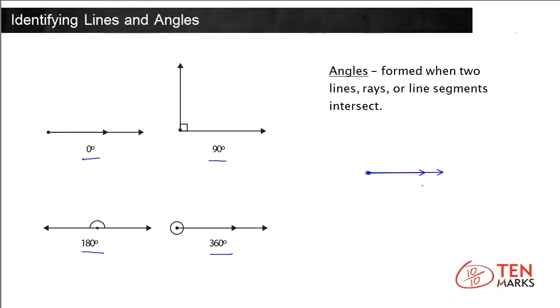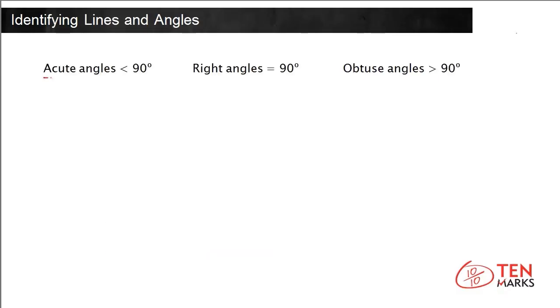Angles can be acute, right, or obtuse, based on their measure. An acute angle is less than 90 degrees in measure. A right angle exactly equals 90 degrees in measure. And an obtuse angle is greater than 90 degrees in measure.